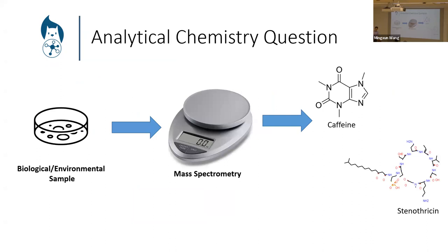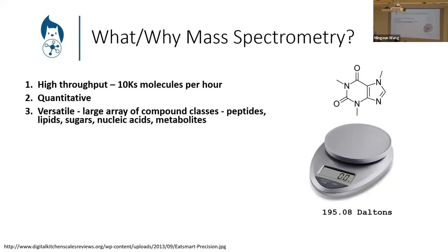Taking a step back from applications, the core analytical chemistry question we start asking is: given some sort of biological, environmental, or chemical sample we want to analyze, we want to be able to measure all the small molecules in there and at the end of the day be able to return some sort of structure — so we can say we have caffeine or strepothrycin or whatever set of molecules are actually present. We want to be able to detect and identify them. That's one of the core questions we want to address.